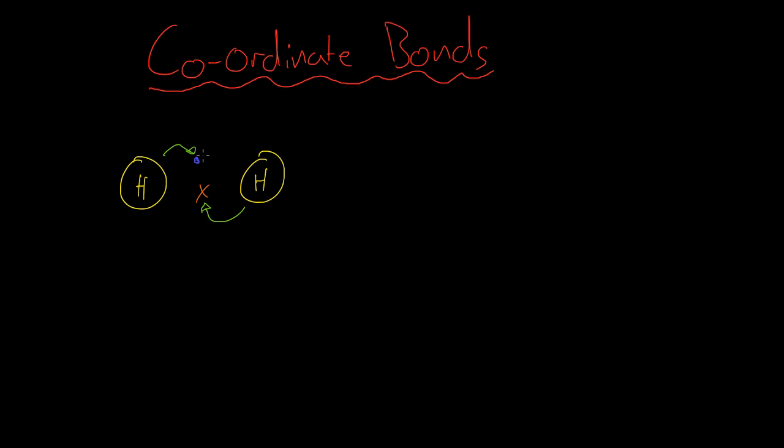But what if, instead of one electron coming from each of the atoms involved in the bond, both of the electrons came from only one of the atoms? Let's look at an example.